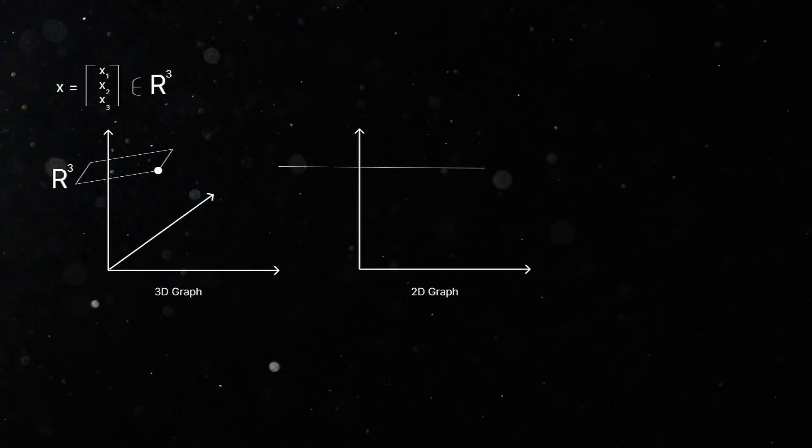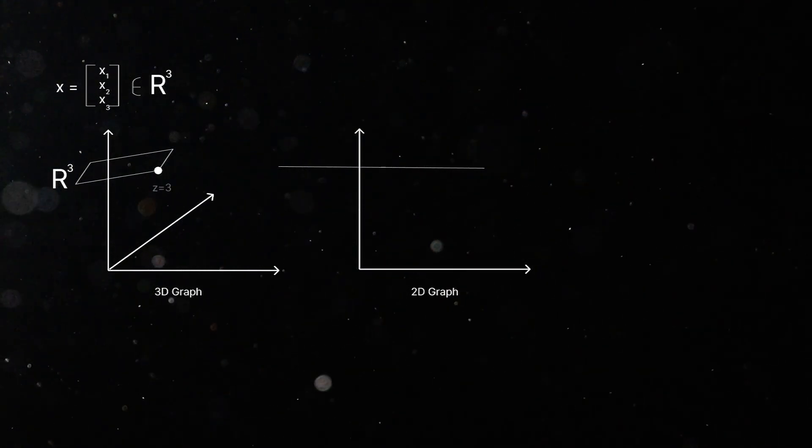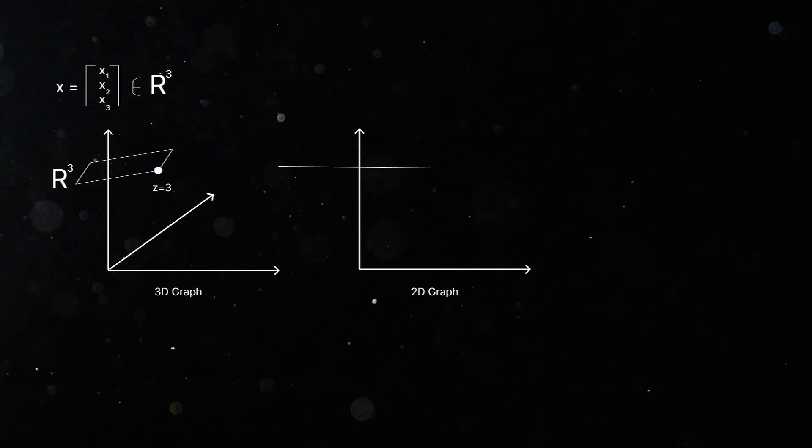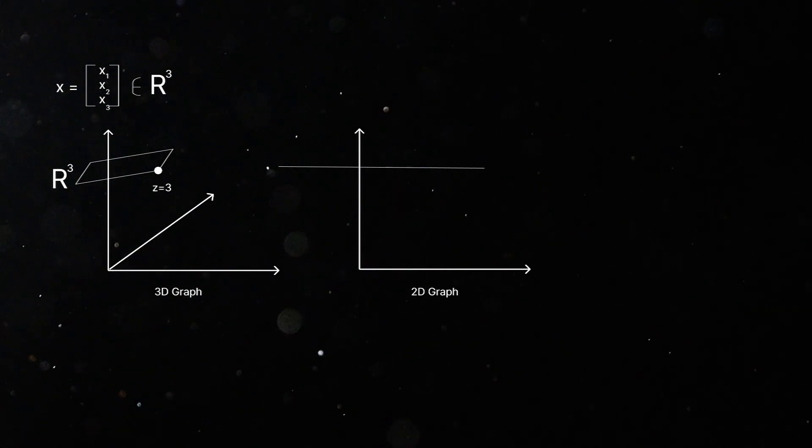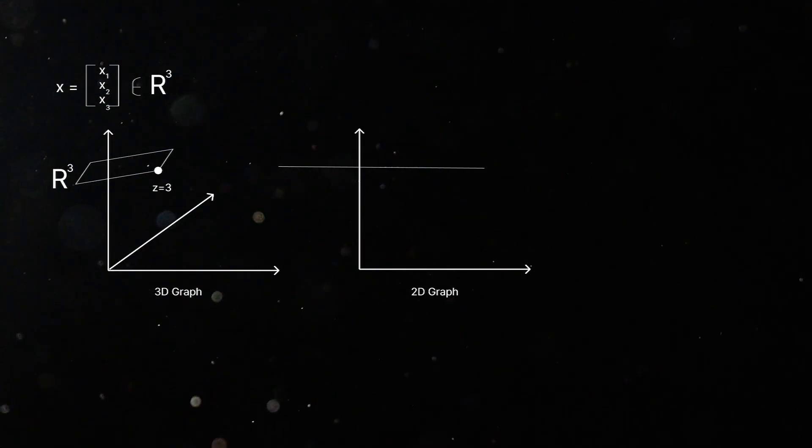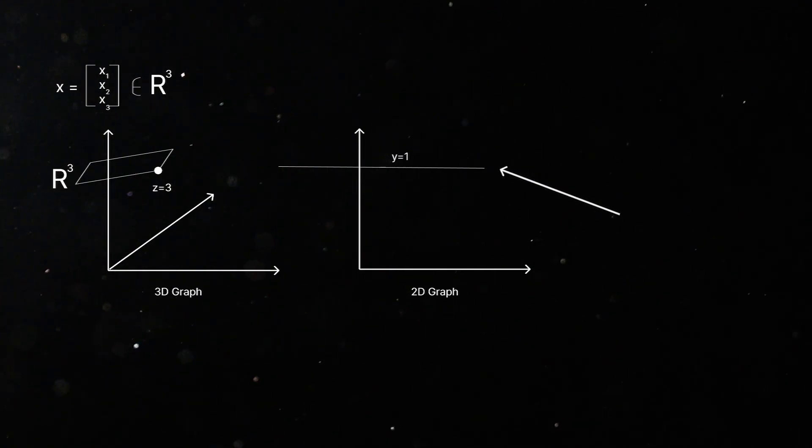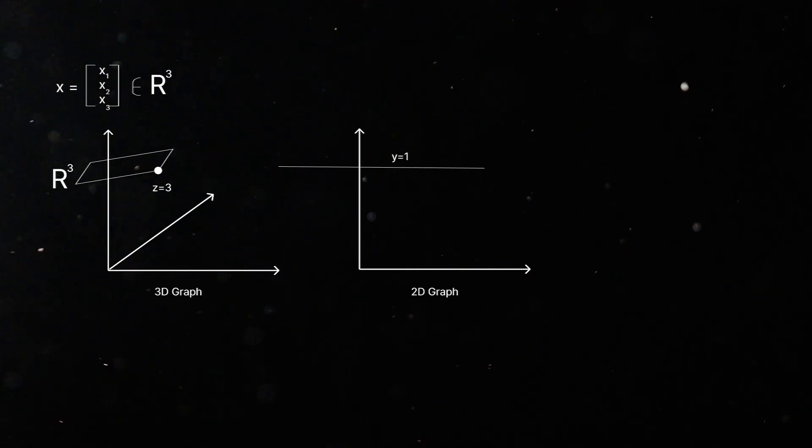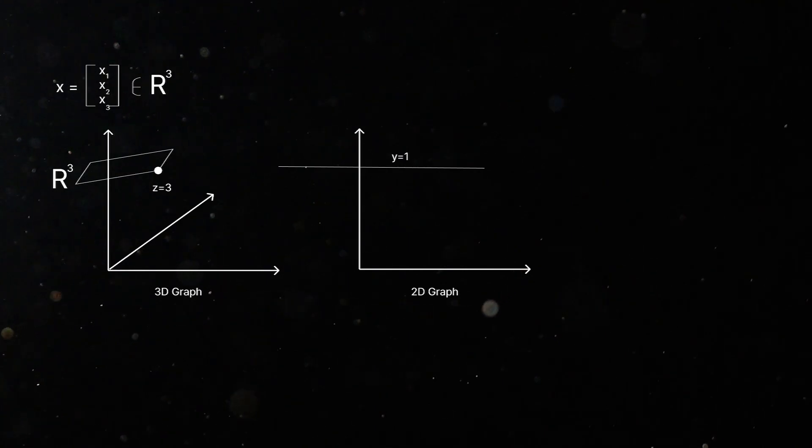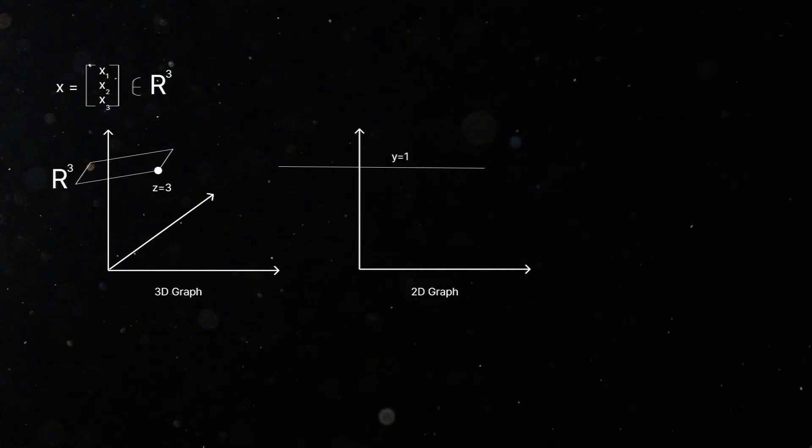In two-dimensional, we might have a line. Here, this could be described by, say, the plane z equals 3, and x and y are free to be whatever. And in this case, this would be described by the line y equals 1. So, this becomes particularly relevant in machine learning when we want to be able to describe the way that points are arranged in this space and what side of the space they fall on.